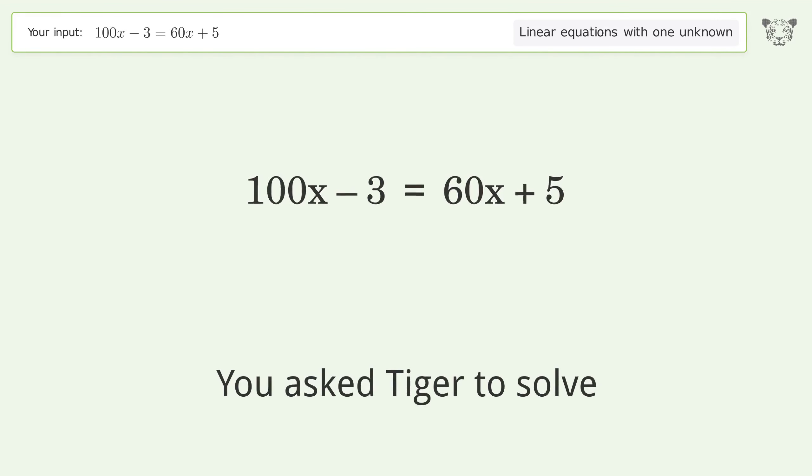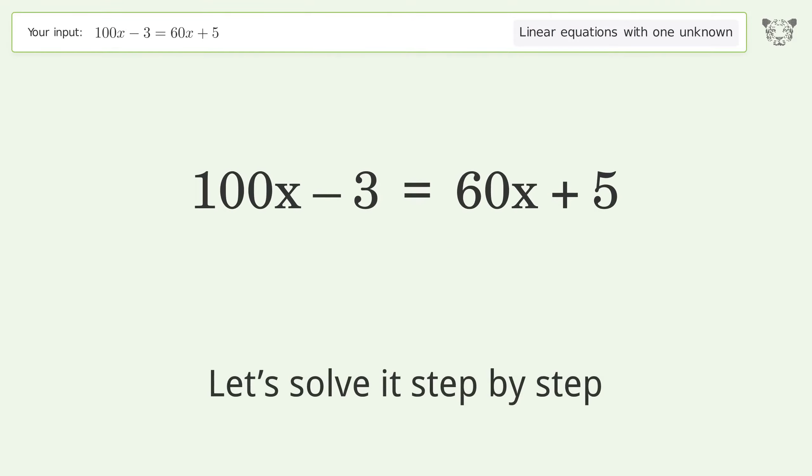You asked Tiger to solve. This deals with linear equations with one unknown. The final result is x equals 1 over 5. Let's solve it step by step.